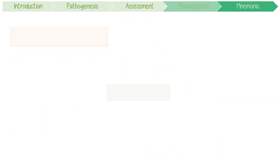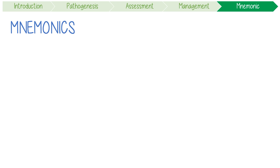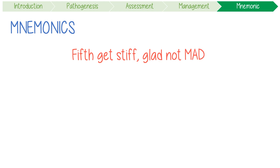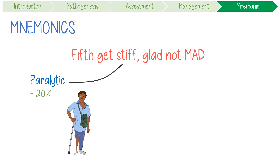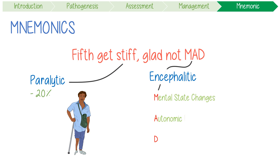To summarise with a mnemonic: for rabies, remember that a fifth gets stiff and they're glad they're not mad. This reminds us that rabies has two forms — paralytic 20% of the time, and otherwise encephalitic with the classic mad features: mental state changes, autonomic dysfunction, and death.